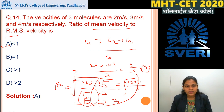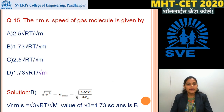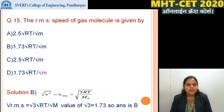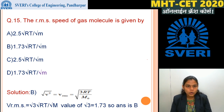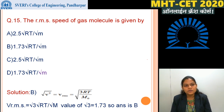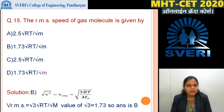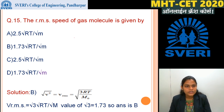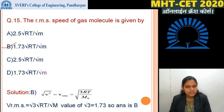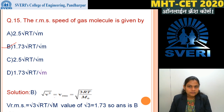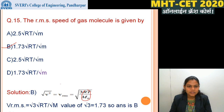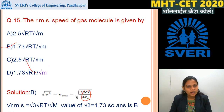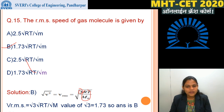MCQ: The RMS speed of a gas molecule is given by which formula? Options: (A) 2.5√(RT/M), (B) 1.73√(RT/M), (C) 2.5√(RT/M), (D) 1.73√(RT/M). The formula for Vrms = √(3RT/M₀). Since √3 ≈ 1.73, the answer is option B: 1.73 × √(RT/M).